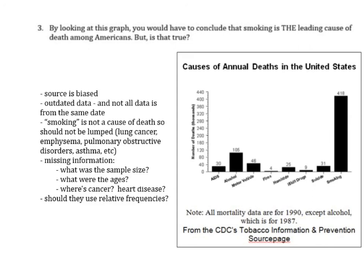One of the biggest issues here is the biased source, and the missing information — leaving out cancer or heart disease could clearly show that those are bigger causes of death. So those are some of the bigger issues in this example.